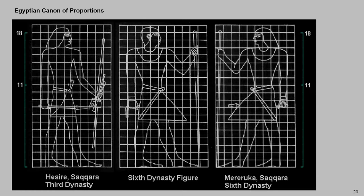One way they did this was by using a grid. This grid could change over time slightly, but for the most part it was based on a series of 18 vertical squares. The average Egyptian was shown to be based on this proportion — each square was the size of a hand. So no matter what period we're in or where this sculpture or painting is, they're always going to follow this strict rule of proportions because the Egyptians wanted this kind of permanence.